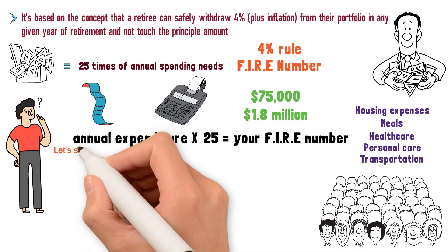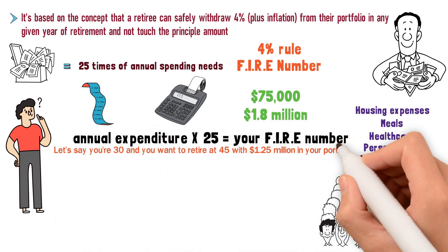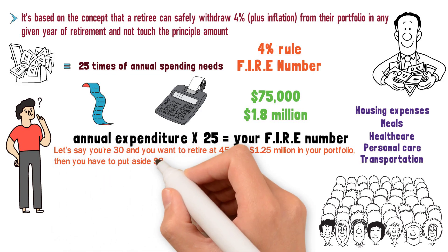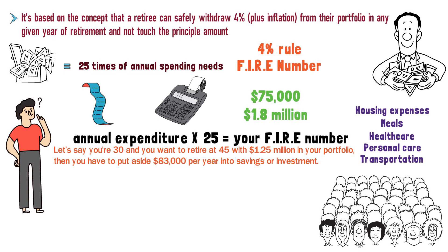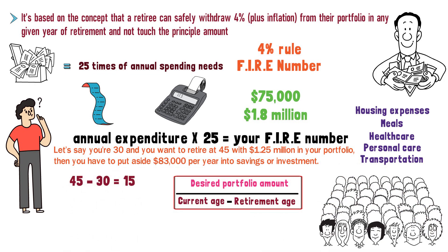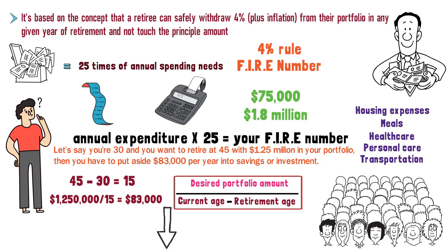On the other hand, let's say you're 30 and you want to retire at 45 with $1.25 million in your portfolio. Then you have to put aside $83,000 per year into savings or investment. To calculate this, subtract your plan to retirement age from your current age, then divide your desired portfolio amount by this value. That is, 45 minus 30 equals 15. $1.25 million divided by 15 equals $83,000. We'll put a link down in the description of a site that can help you calculate your FIRE number.